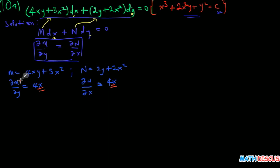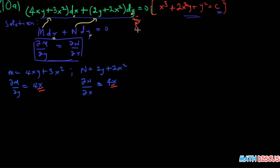What we observe is that 4x equals 4x, so the partial derivative of M with respect to y equals the partial derivative of N with respect to x. This implies that this is indeed an exact equation — it is exact.